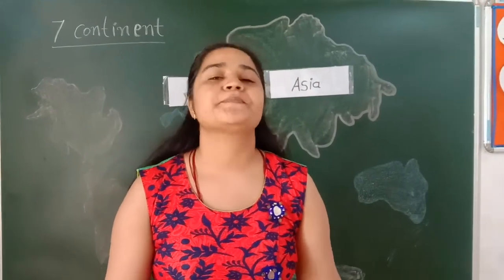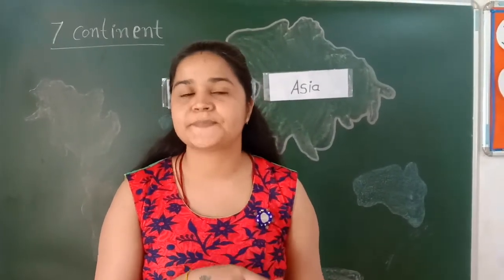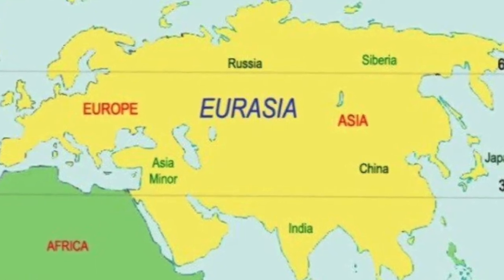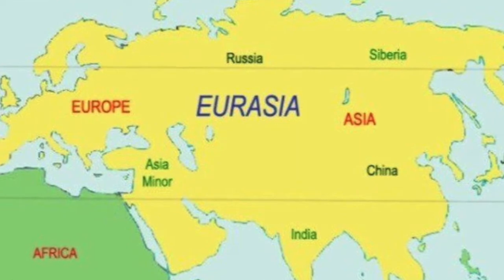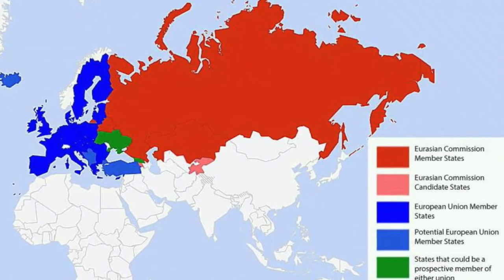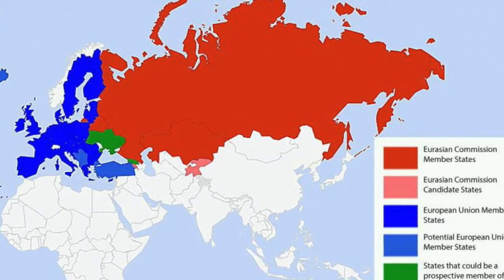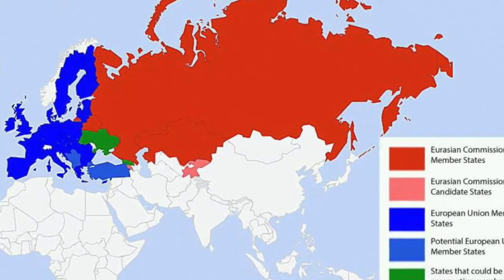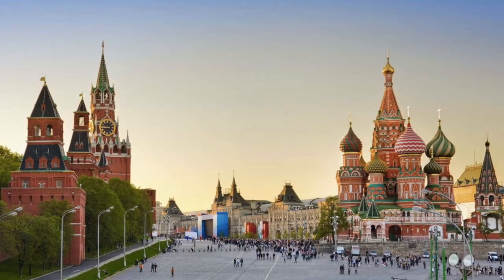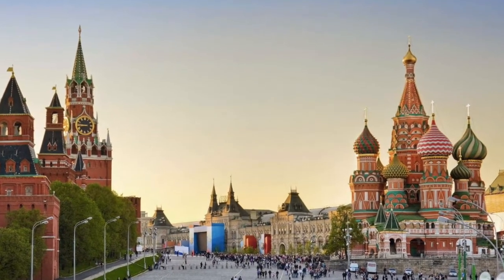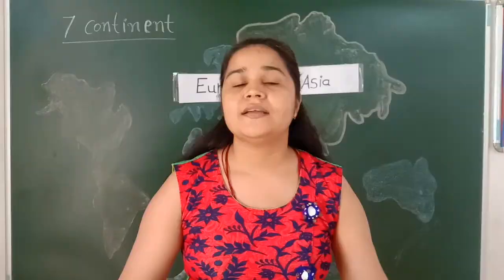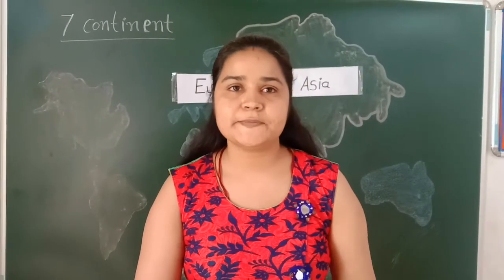The largest country in Europe is Russia, and the smallest country is Vatican City. There are also island countries such as Iceland.